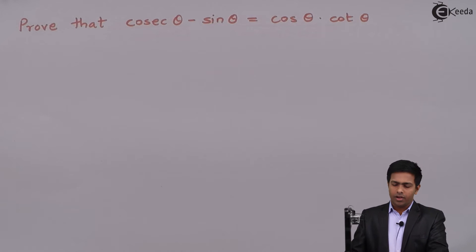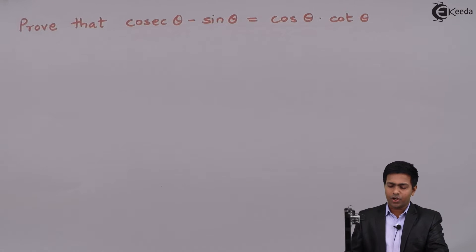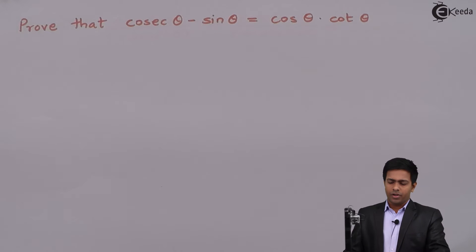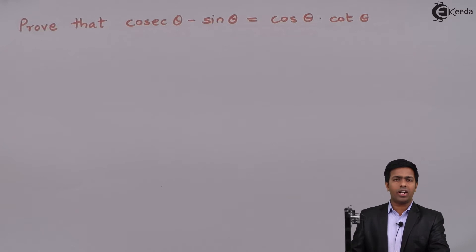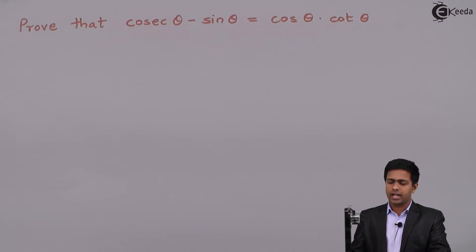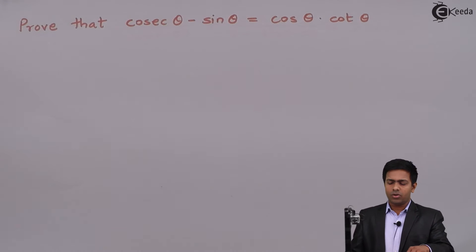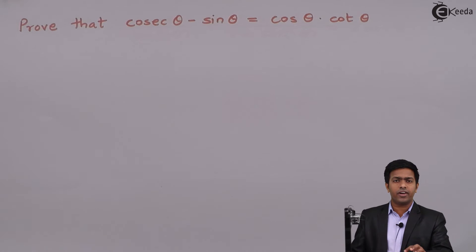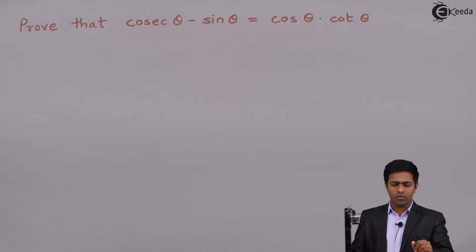Hello friends. Here we have to prove that cosec theta minus sin theta is equal to cos theta into cot theta. On the left hand side we have two trigonometric ratios, cosec and sin, whereas on the right hand side we have different trigonometric ratios, cos and cot. The basic idea is whenever you have different ratios on both sides, it is always convenient to convert everything into sin and cos and then solve it.